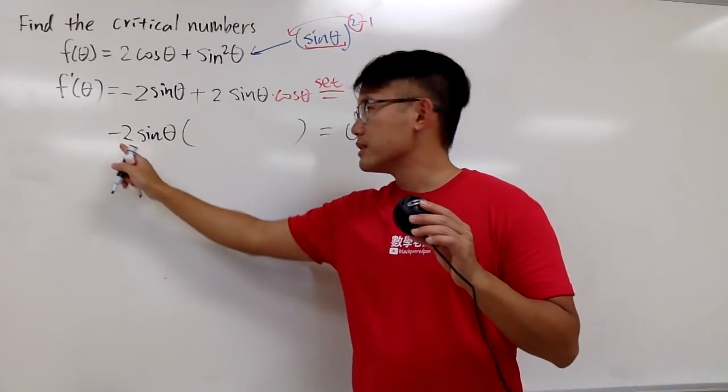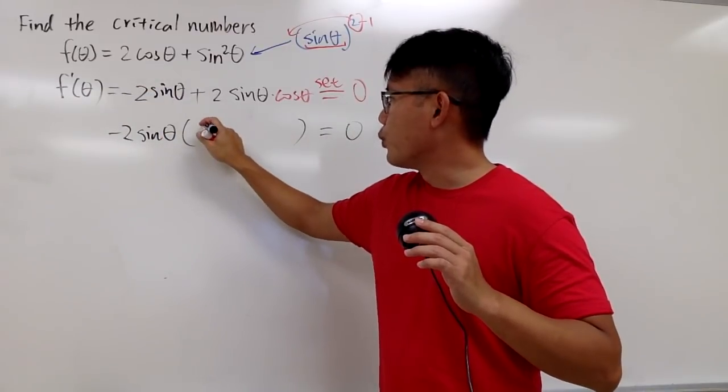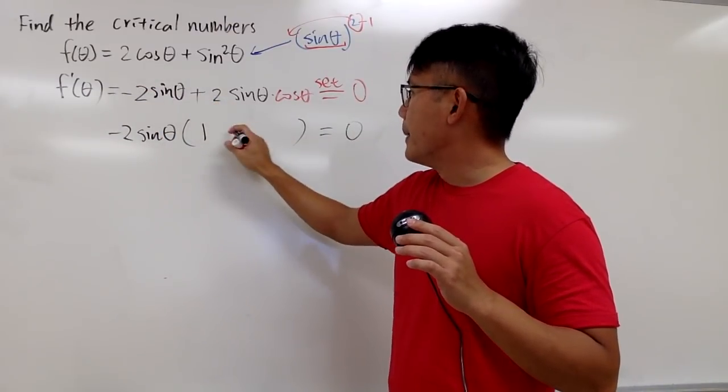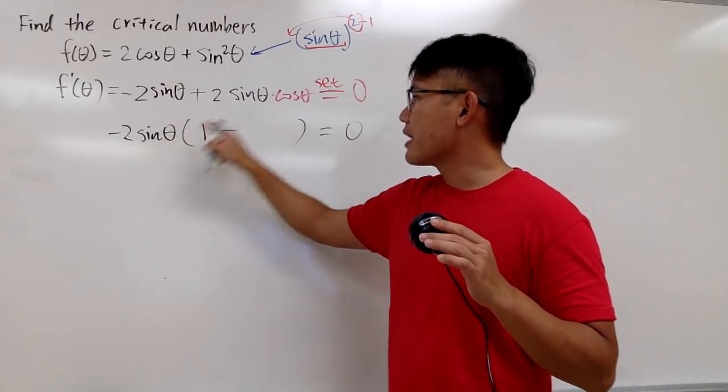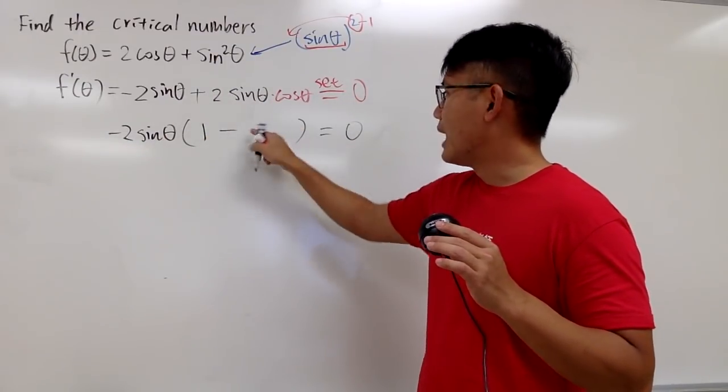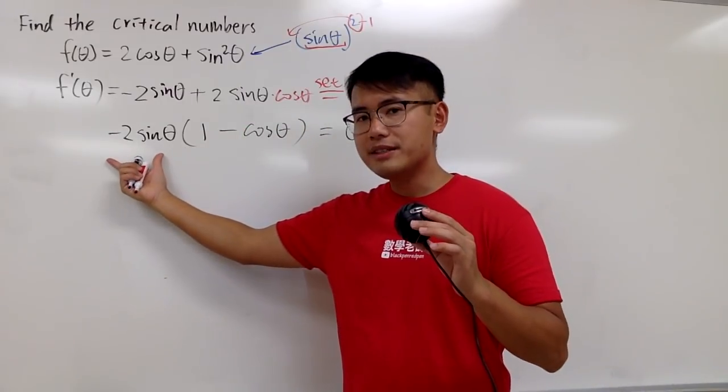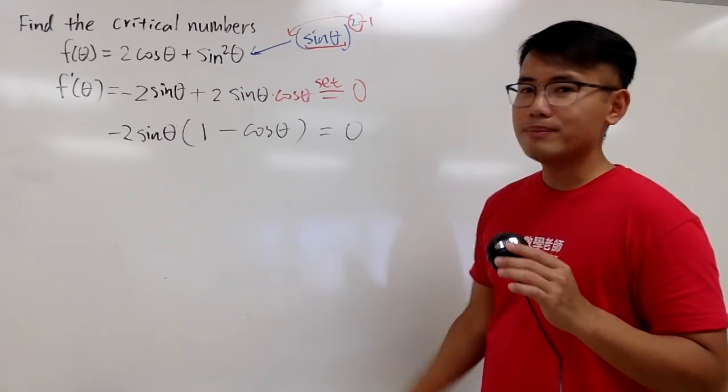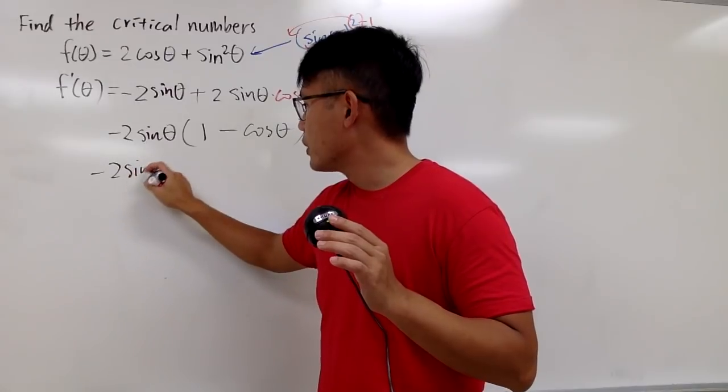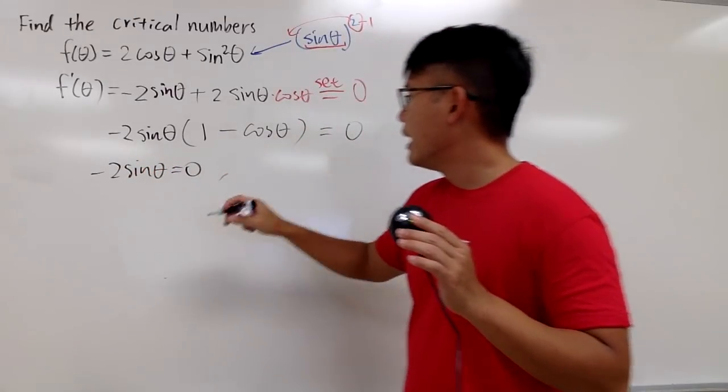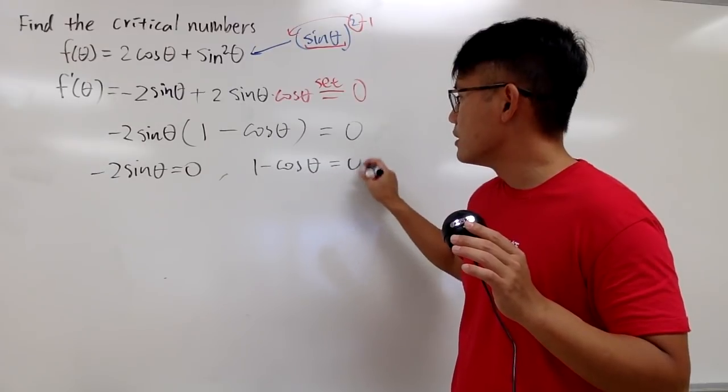And if I factor out a negative 2sinθ, this first term is going to be 1 inside. And then, this is going to be a negative, because I factor out a negative, the 2 is out already, the sinθ is out already. We will have the cosθ here. And you see, we have this times that, it's equal to 0. What do we do? Let's go ahead, put this down. Make this equals to 0. And secondly, we also make 1 minus cosθ to be 0.